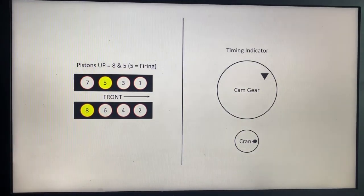Another 90 degrees will put number eight and five up, with number five being the firing piston. Another 90 degrees will put number four and seven back up, with number four being your firing piston. Then another 90 degrees, the last 90-degree turn, will put number three and number two back up, with number three being your final firing piston. That concludes this video. Hope this was helpful.